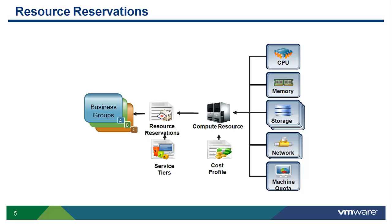This demo will focus on the second policy, which involves reserving compute resources for the different business groups. Each reservation will define what parameters will be allocated to the group, including CPU, memory, storage, and networks. Reservations will vary slightly depending on the platform the compute resource was discovered on — virtual reservations will vary from physical and cloud reservations. Each reservation will inherit the cost of the compute resource, and as resources are deployed, the cost will be assigned to that request.